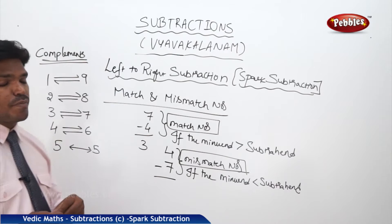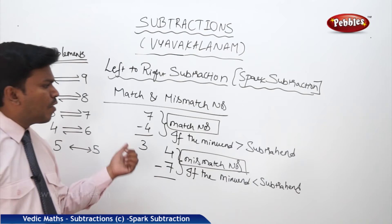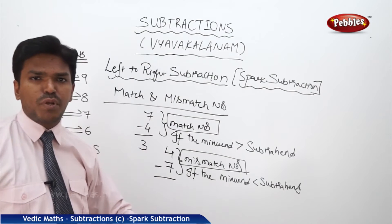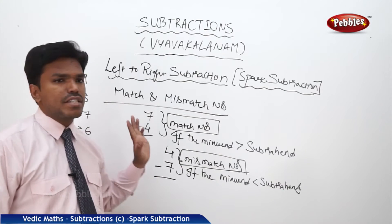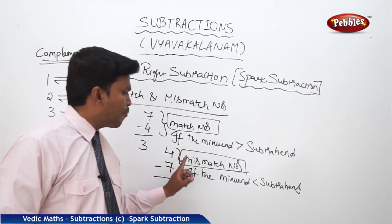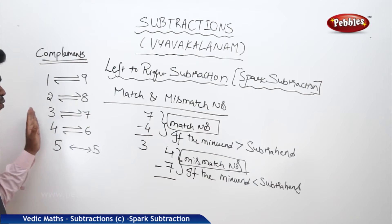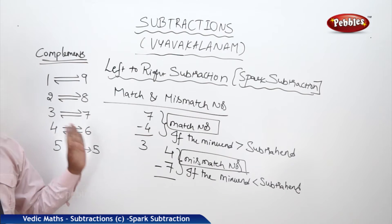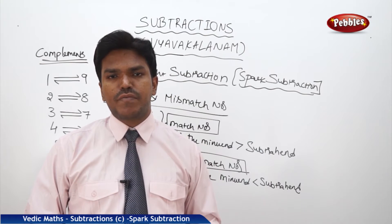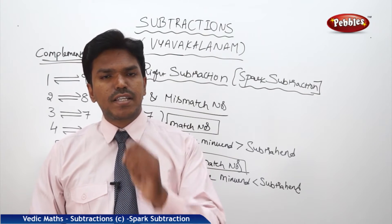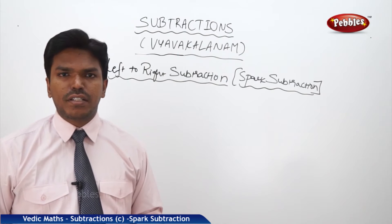In this type of subtraction, we use mainly these two concepts: match and mismatch numbers, and complements. To recap: whenever the minuend is greater than the subtrahend — the above number is greater than the below number — or if subtraction is practically possible, those numbers are match numbers. If subtraction is practically not possible and the minuend is less than the subtrahend, we call it mismatch numbers. The complements are: 1↔9, 2↔8, 3↔7, 4↔6, 5↔5. Now we will start the left to right, or spark, subtraction method with double digit minus single digit.